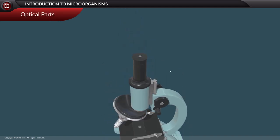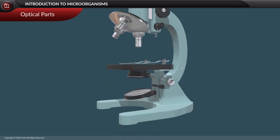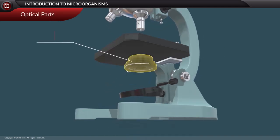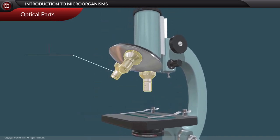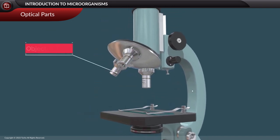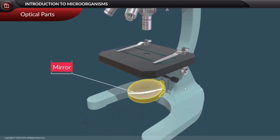The optical parts of a compound microscope include: eyepiece, condenser, objective lens, and mirror.